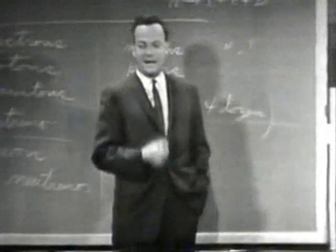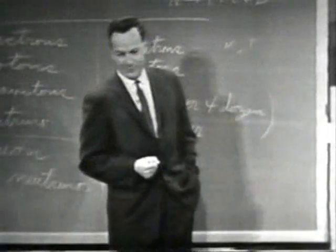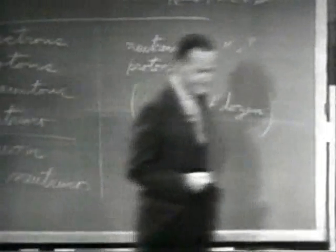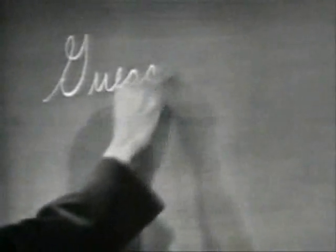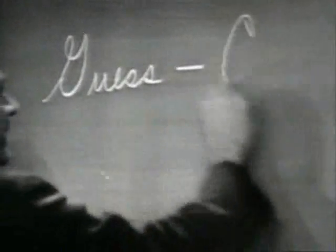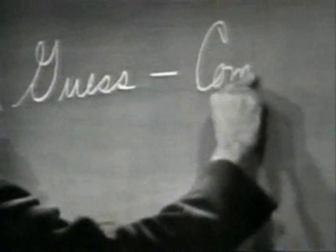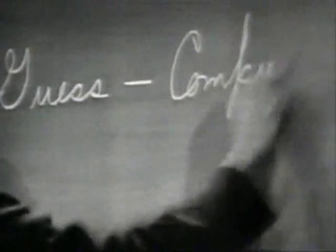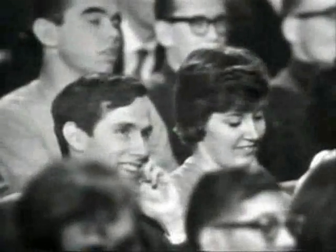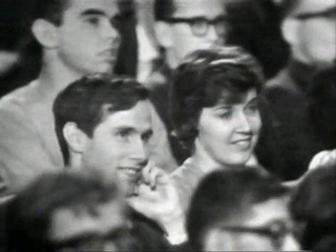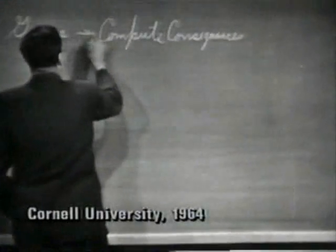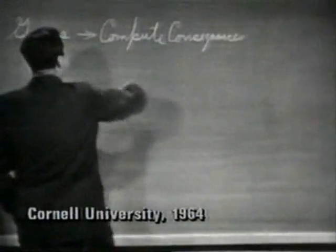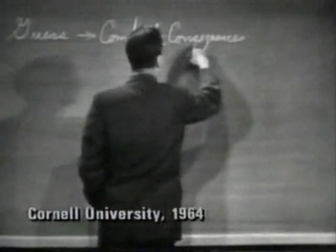Now, I'm going to discuss how we would look for a new law. In general, we look for a new law by the following process. First, we guess it. Don't laugh, that's really true. Then we compute the consequences of the guess to see what — if this law that we guessed is right — what it would imply.